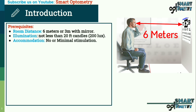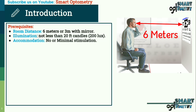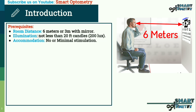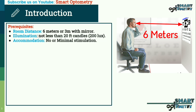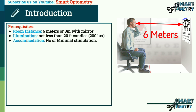The third prerequisite is accommodation — there should be no or minimal stimulation. Accommodation can be stimulated if the room length is less than 6 meters or the room light condition is dim. When accommodation gets stimulated, it increases the converging power of the eyes and may increase the visual acuity in a hyperopic patient, making the measurement inaccurate.